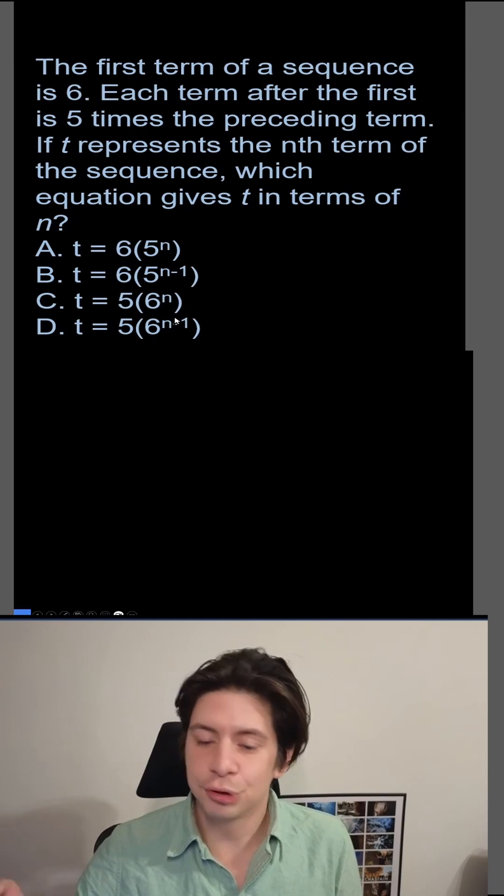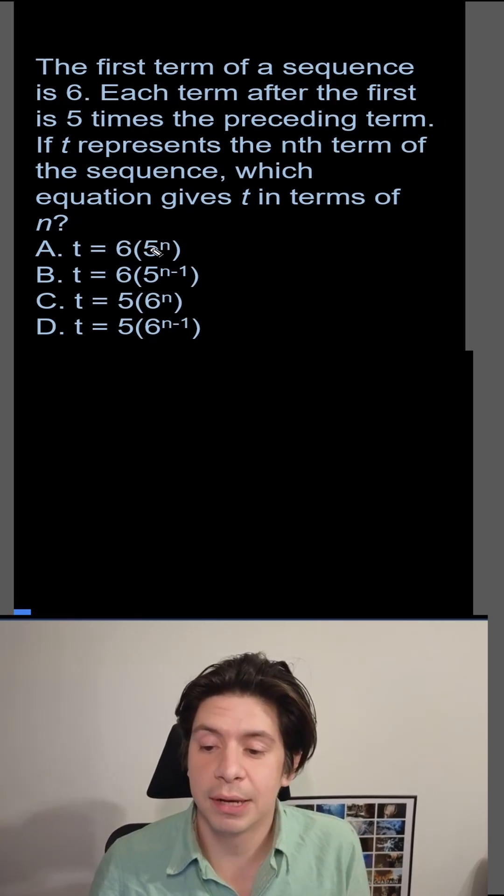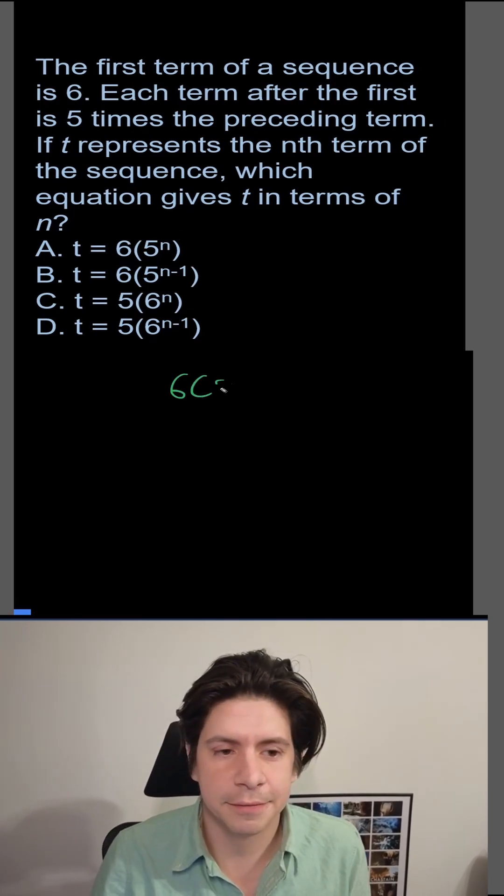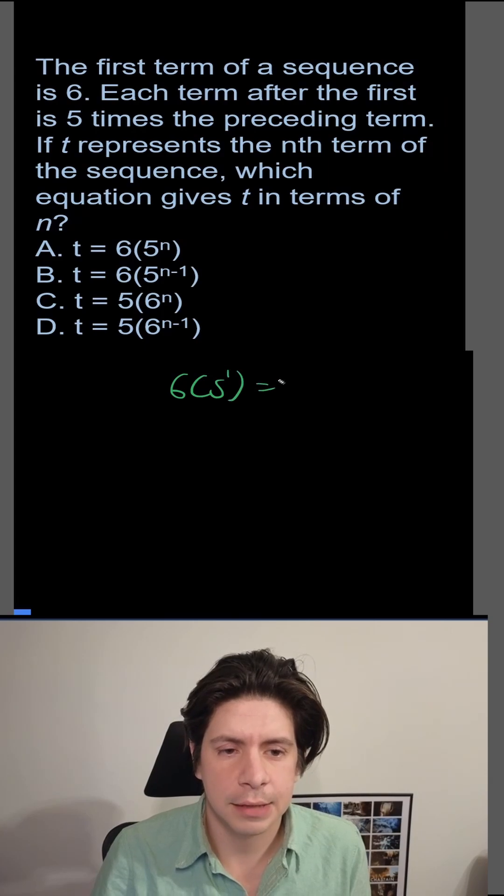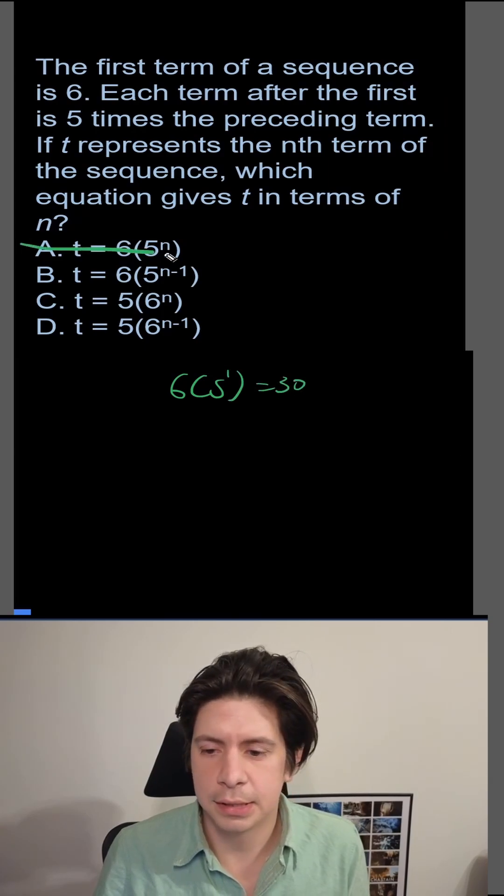So we want the first term to equal 6. When we plug in 1, which one gets a 6? In A, we get 6 times 5 to the 1. That equals 30. That doesn't work.